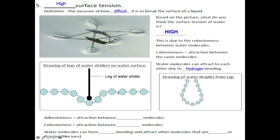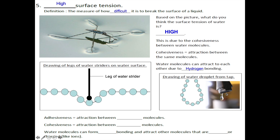Another way of looking at the surface tension of water is by looking at the formation of a water droplet as you slowly turn your water tap on. This is a drawing of a water droplet from a tap. We know that if we turn the tap on very, very slowly, a water droplet will form.